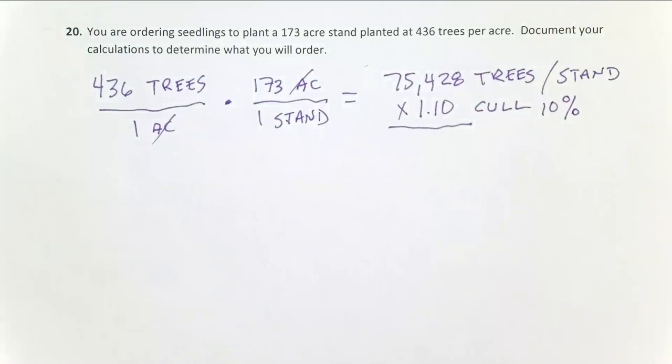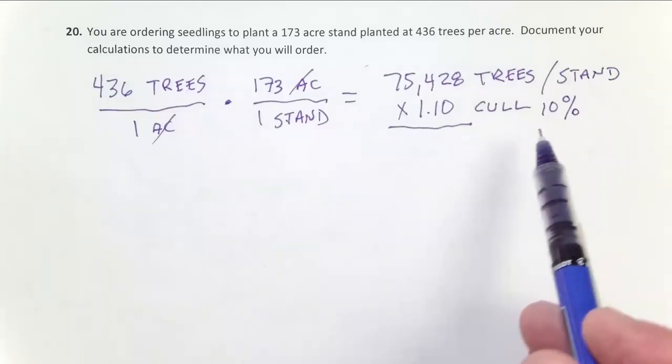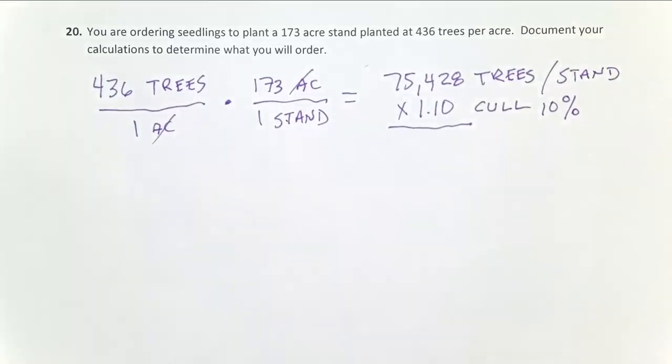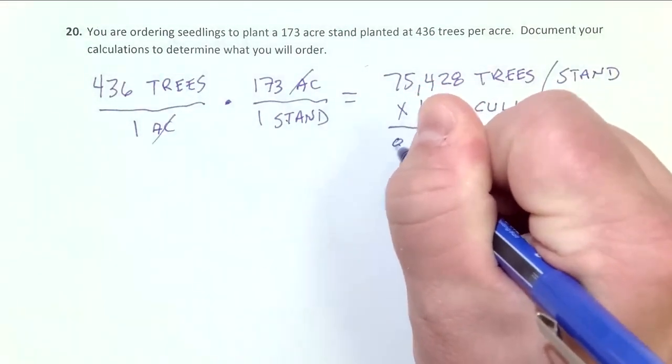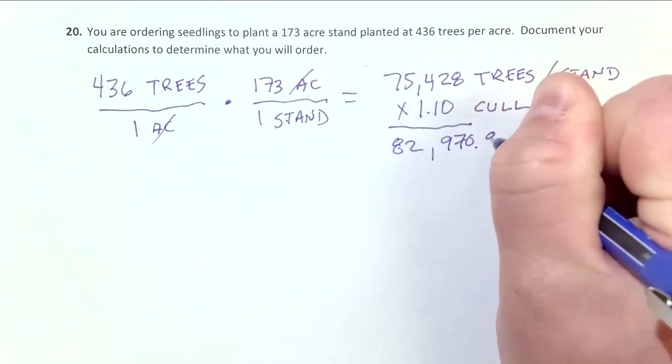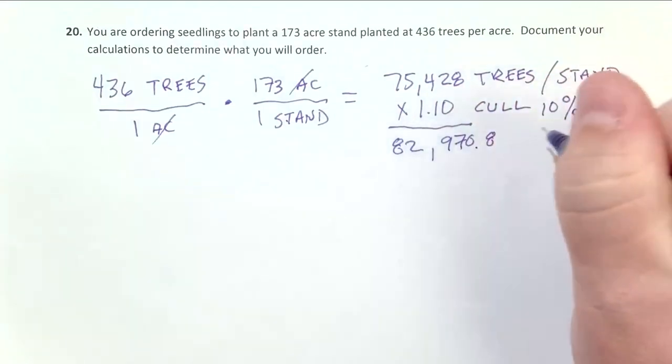So that 10% is the number you're going to come at. That's the art of silviculture. You'll figure that out in your career. But for class this semester, we're going to use 10% every time. And the simplest way to increase the number of seedlings by 10% is what I've written out here. You simply multiply that number by 1.10. That gives you the proportion that scales it up by 110%. So that means we order 82,970.8 seedlings.